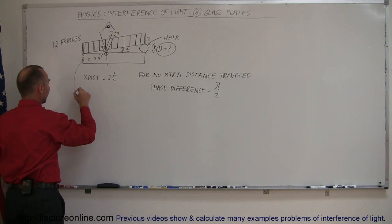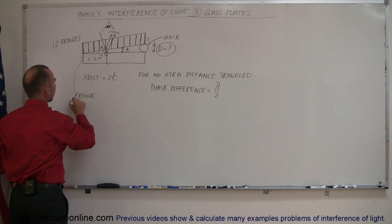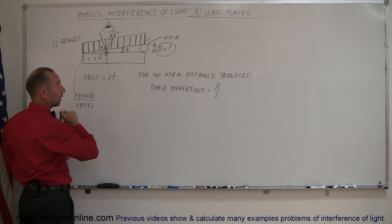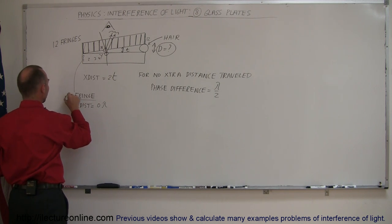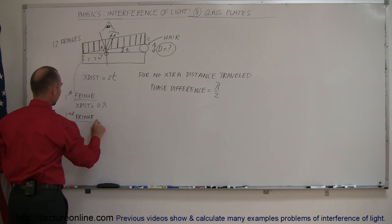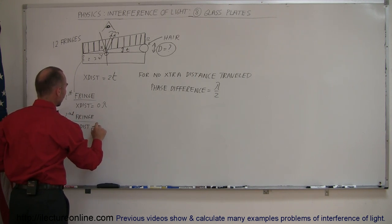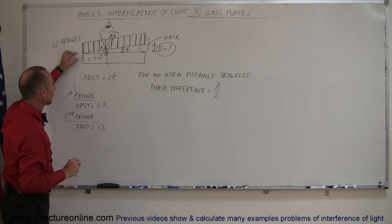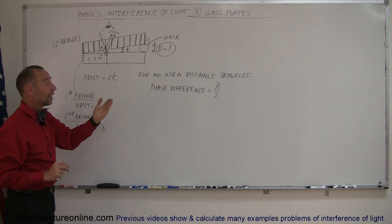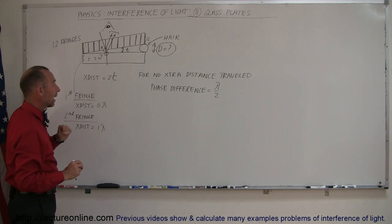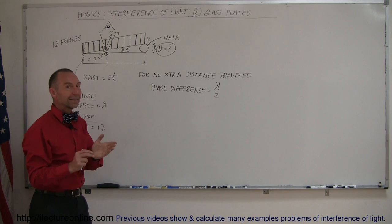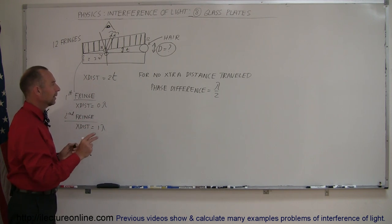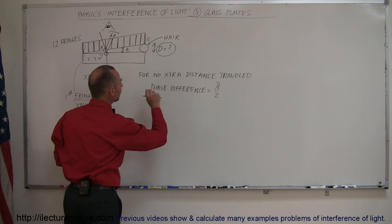For fringe 1, the extra distance traveled is equal to zero wavelengths — zero lambda. For the second fringe, the extra distance traveled is equal to one whole wavelength. Each time the extra distance traveled is a whole wavelength, the two reflected rays will be out of phase since one experienced a phase shift and the other did not. So for an even number of wavelengths difference in extra distance traveled, you always have a condition of destructive interference, because one ray is phase shifted and the other one is not.